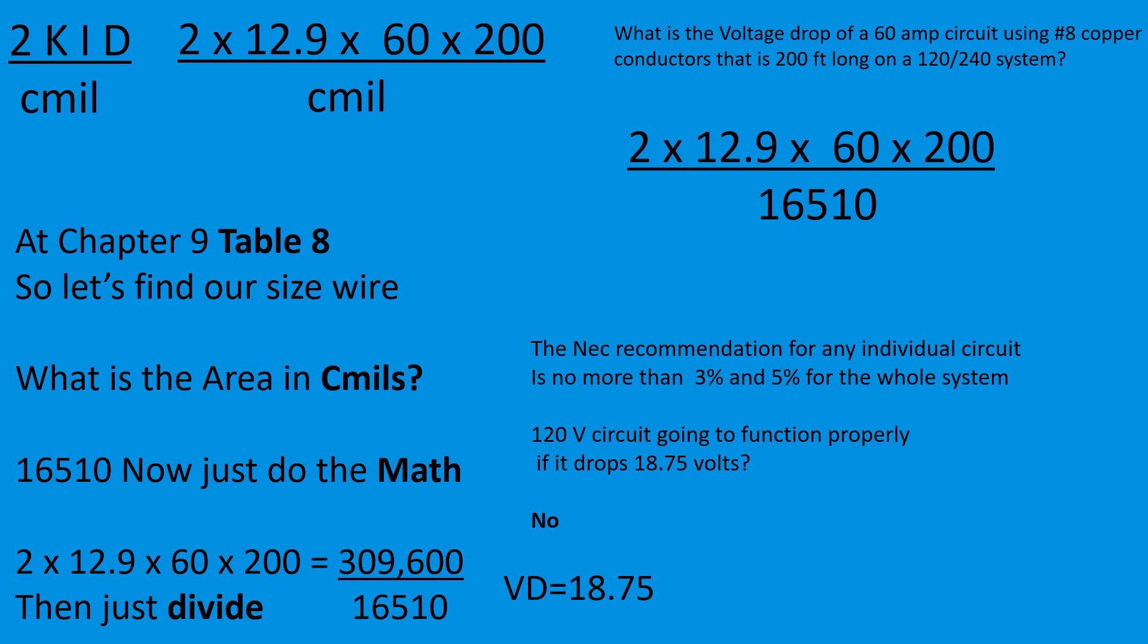Now the NEC recommendation, not code but recommendation, for any individual circuit is no more than 3% and 5% for the whole system. A 120 volt circuit, is it going to function properly if it drops 18.75 volts on the way? No. So this is not going to be an acceptable circuit. You're going to have to increase your wire significantly in order to compensate for this voltage drop in this circuit. So you could do the math and figure out what size wire you could use. And this is the fastest, easiest way to do voltage drop calculations.